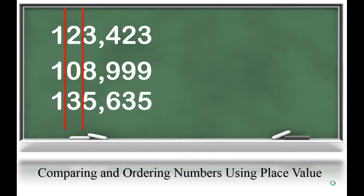Students can also line the numbers up to compare and order them and start by looking at the digit all the way to the left in the greatest place value. In this case, our 100,000s are all the same. So we want to move to the 10,000. Then we could compare and order our numbers.